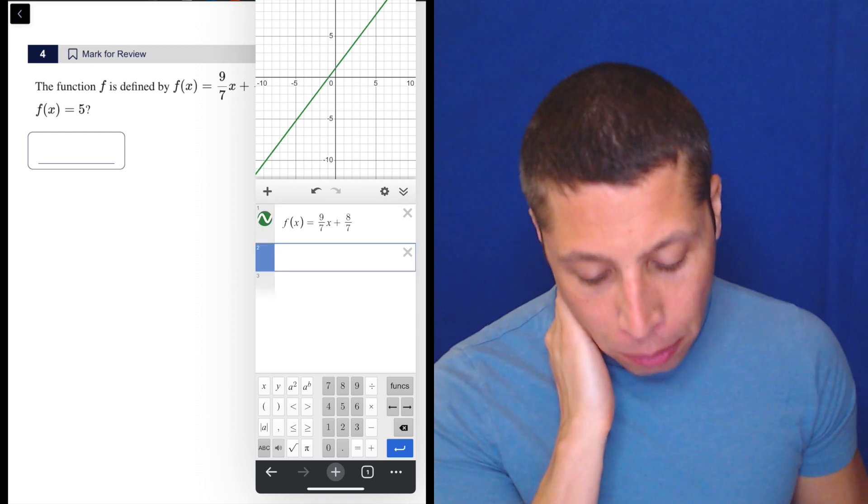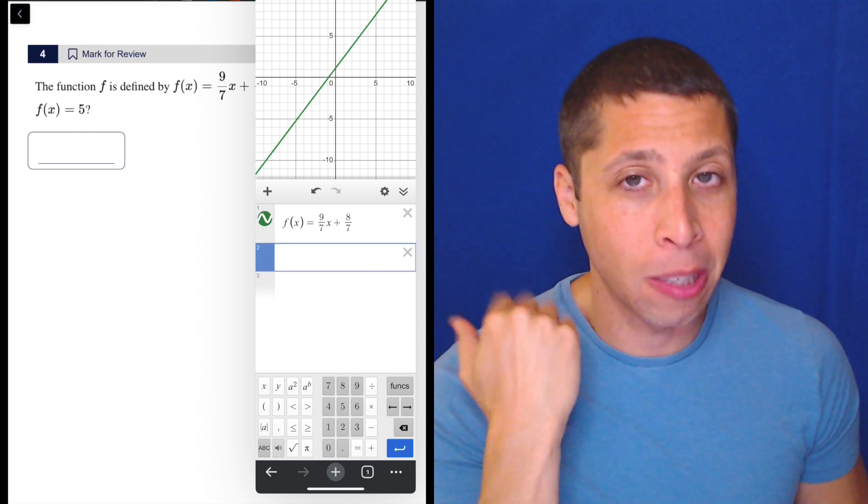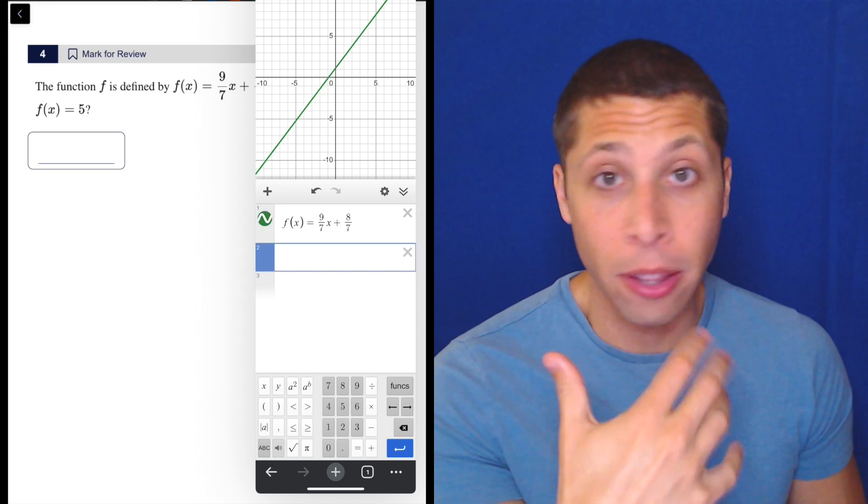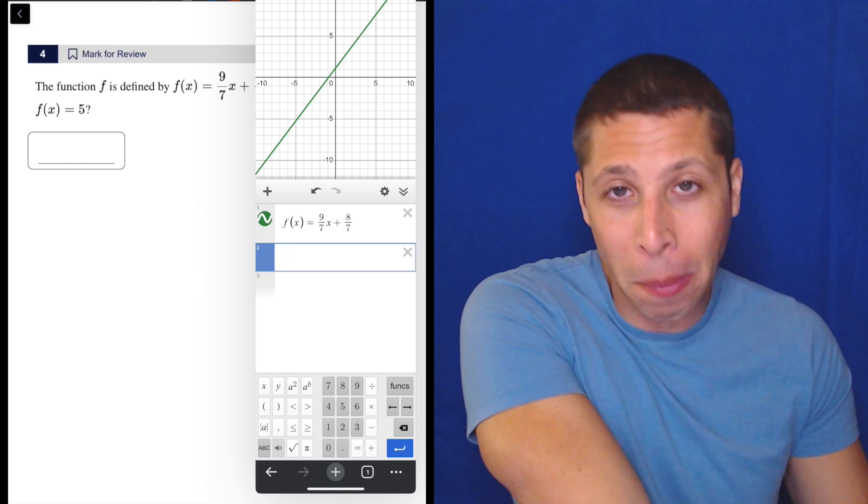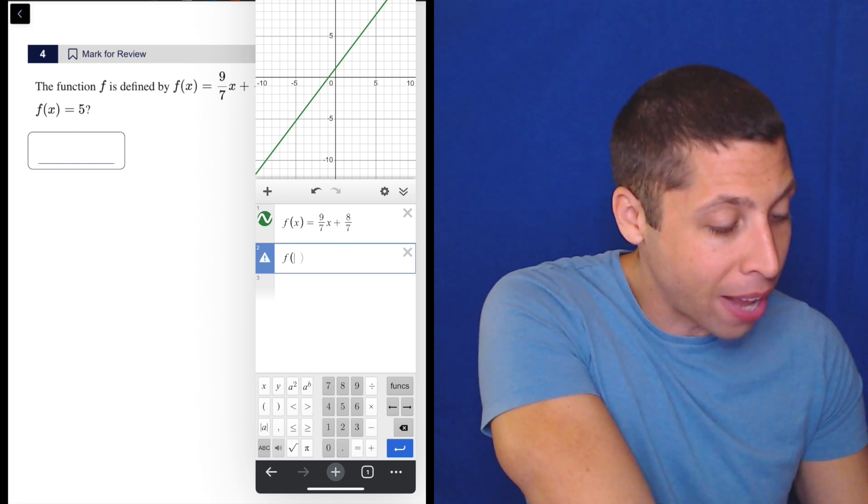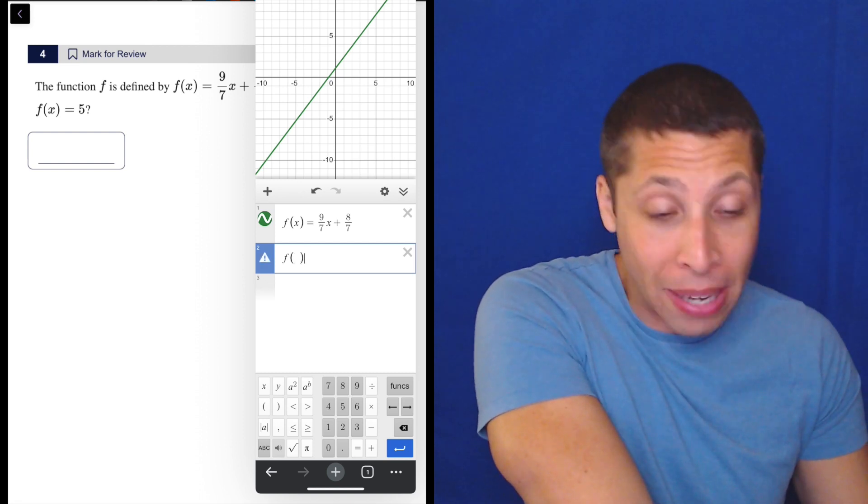The biggest thing that people are going to mess up with function notation is putting the number in the wrong spot. In a way this is just plug points into equations, but your temptation is probably to put that 5 in for x, but no, we're going to put that 5 in for the y basically.